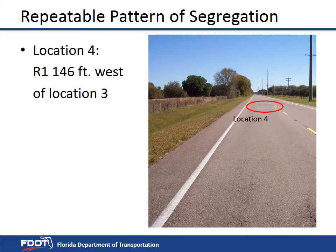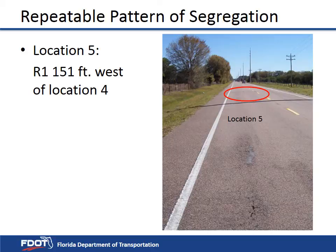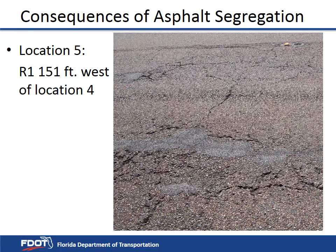Looking westward, the next area can be seen about 146 feet away. Location 4 is shown here with a concentration of alligator cracking and patching of raveled areas; it is located 146 feet west of Location 3. Location 5 is shown here with a concentration of cracking and patches due to raveling, located 151 feet west of Location 4.